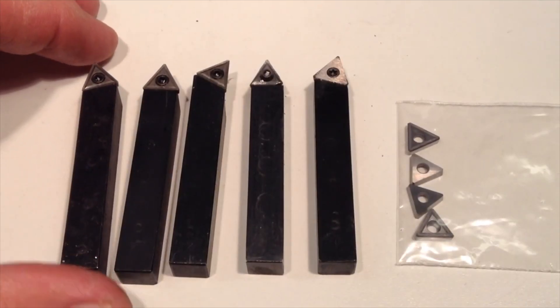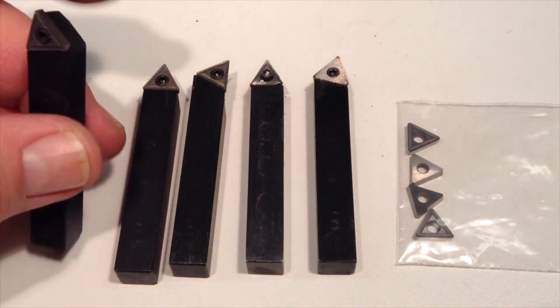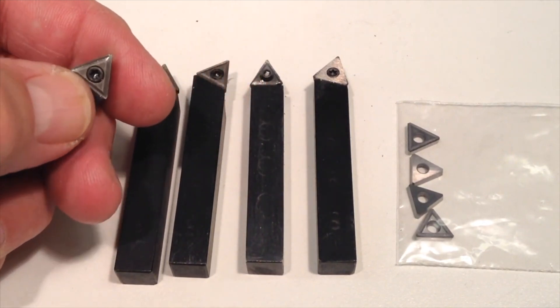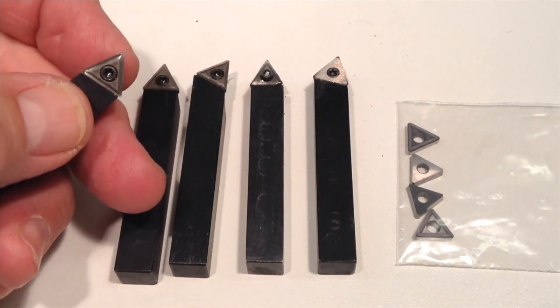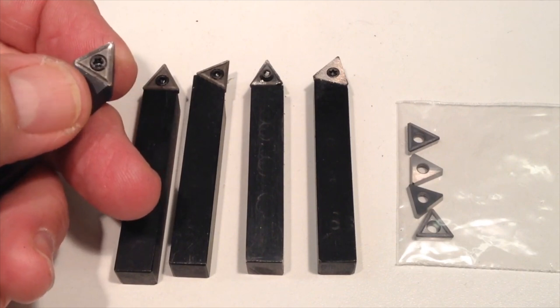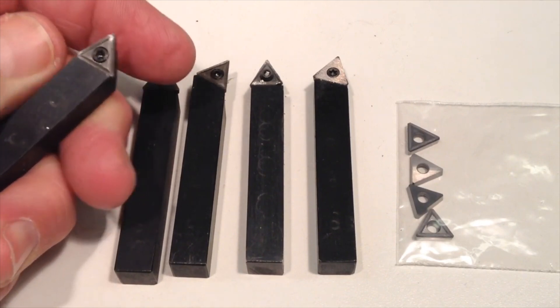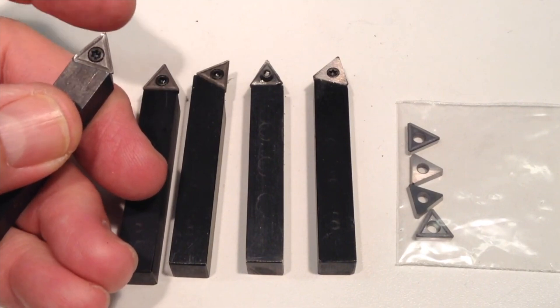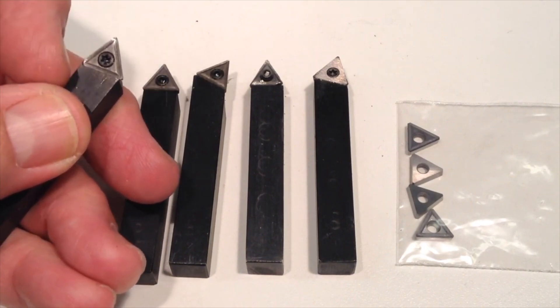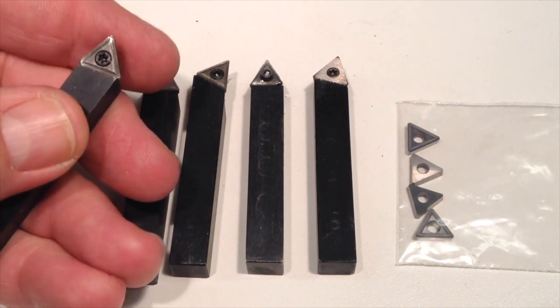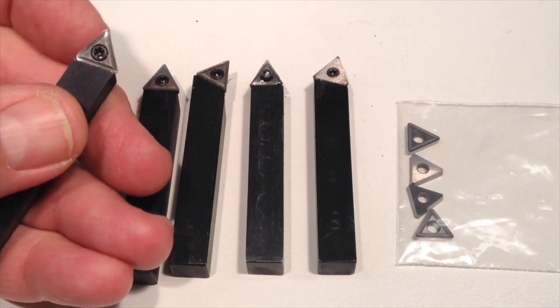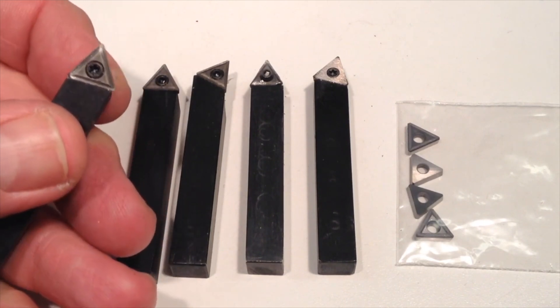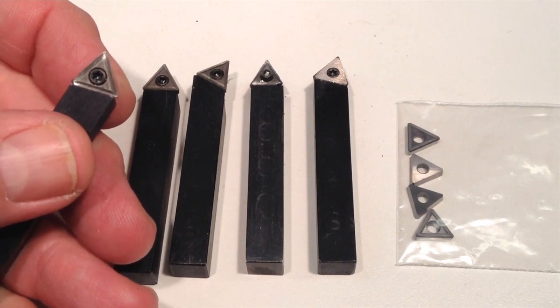Next we'll look at what are called indexable carbide cutting tools. And indexable refers to the fact that these can be rotated around. You can see the tip is triangular in shape and, in fact, has three cutting points on it. And when one of the tips becomes dull or perhaps chipped, you can simply rotate it 120 degrees and bring a fresh cutting surface into play. And that rotation is referred to as indexing. So that's where the name indexable carbide comes from.